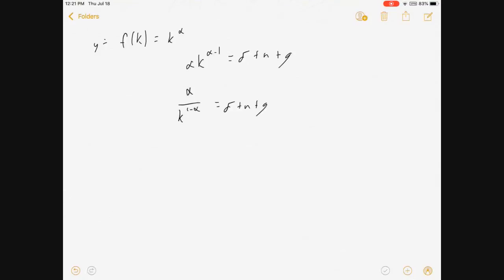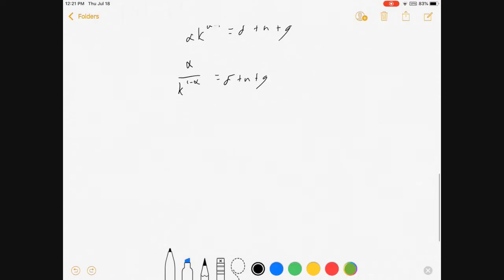This is alpha over k to the 1 minus alpha equals delta plus n plus g. And where alpha is smaller than 1, 1 minus alpha is a much nicer exponent to work with.